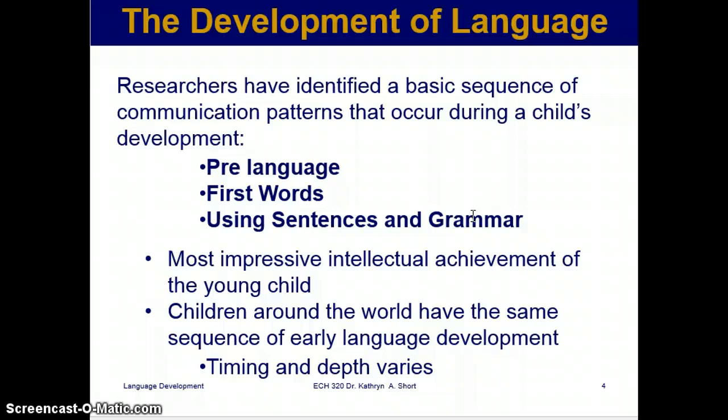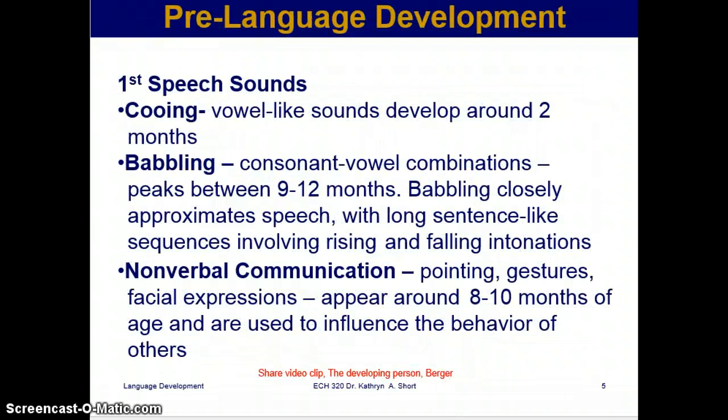Now we're going to talk about the development of language. Researchers have identified a basic sequence of communication patterns that occur during a child's development: pre-language, first words, using sentences, and grammar. The most impressive intellectual achievement of the young child — children around the world follow the same sequence of early language development, though timing and depth varies.